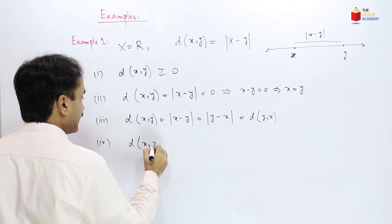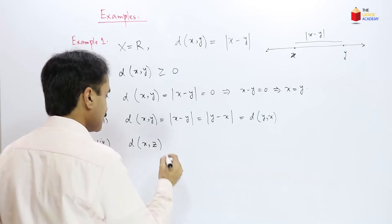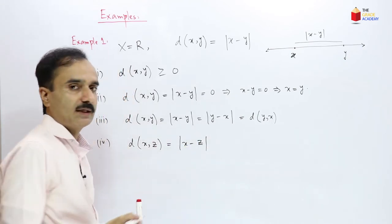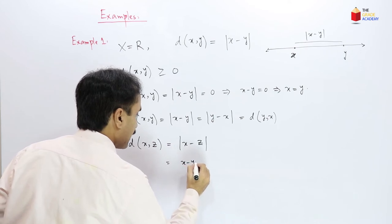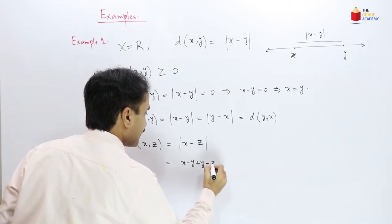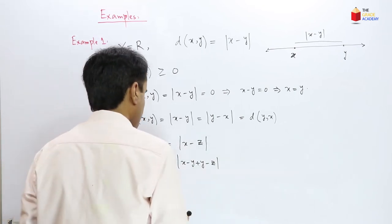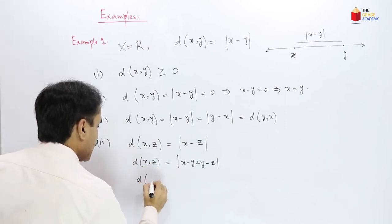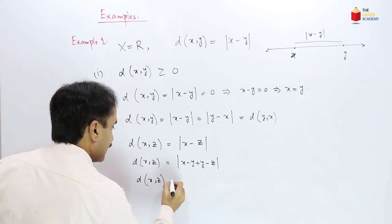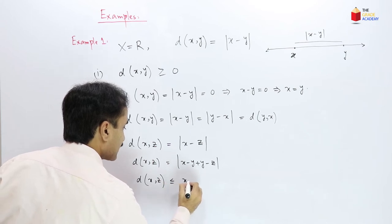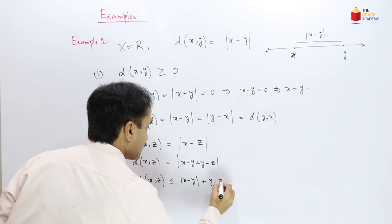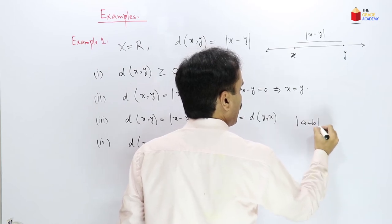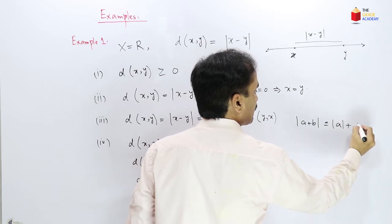d(x,z) for any two real numbers equals |x − z|. We can write this as |x − y + y − z|. So d(x,z) is less than or equal to |x − y| + |y − z|. Here we use the property that |a + b| ≤ |a| + |b|.